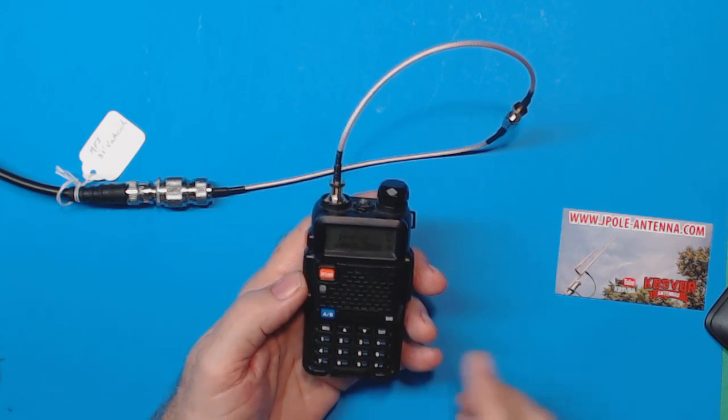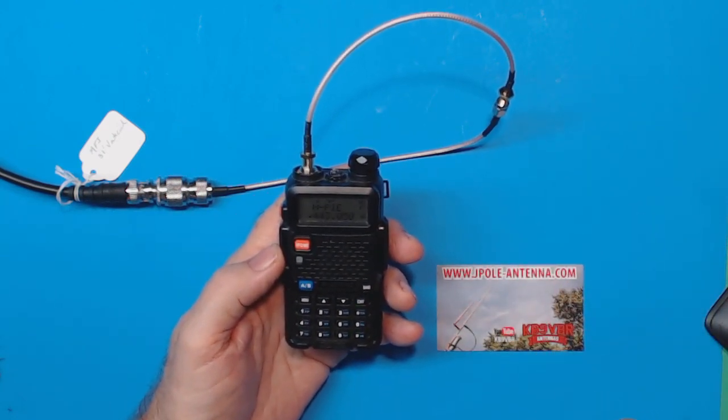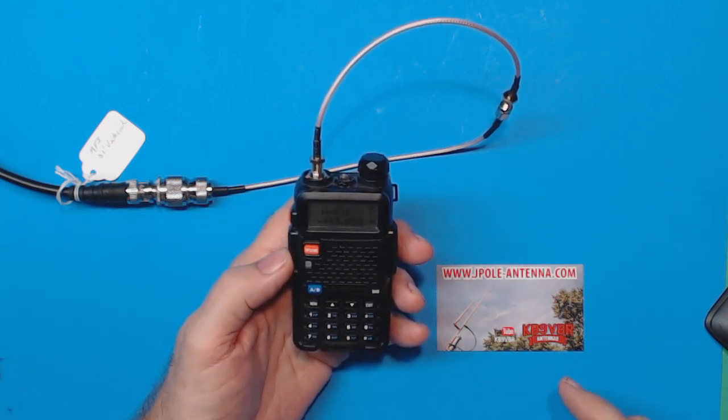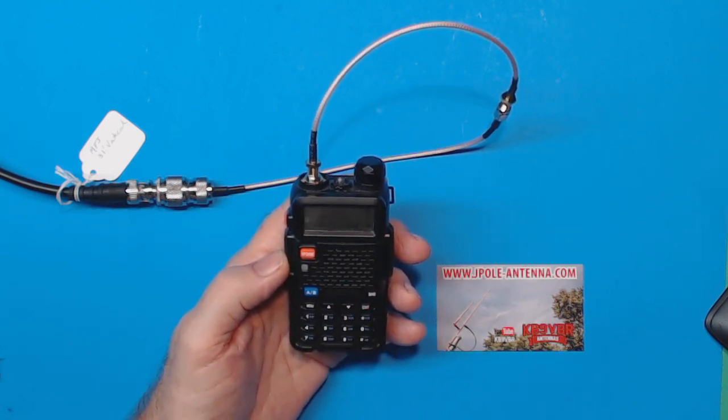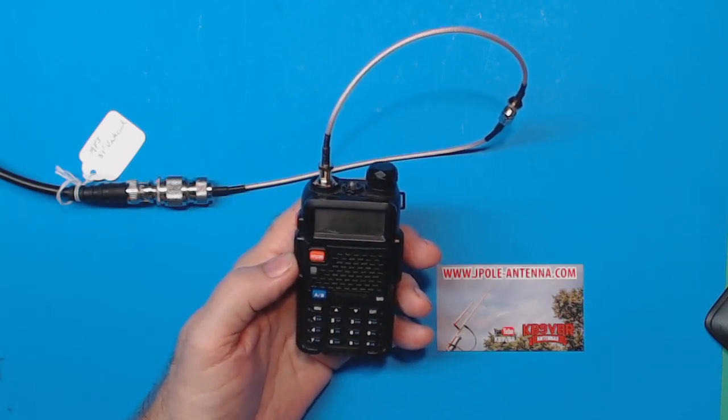So I think you've got some good antennas here. If you're interested in one of these antennas, contact Mike on eBay. Again, KB9VBR is his name on eBay. I think this particular one sells around $35. If you enjoyed the show, please give me a thumbs up and have a great day.